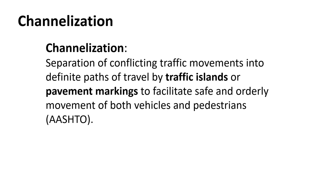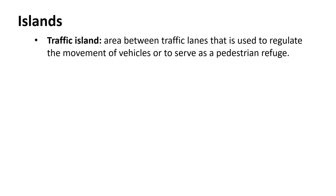Channelization separates conflicting traffic movements and defines the path we want people to use — like a special turning roadway for right turns. We do that with traffic islands and pavement markings. Islands can be striped, which is just a pavement marking, or a raised island with a curb around it. We can form islands using a raised curb, pavement markings or striping, or simply by having the pavement end and grass begin. Those are the three ways to form a traffic island.